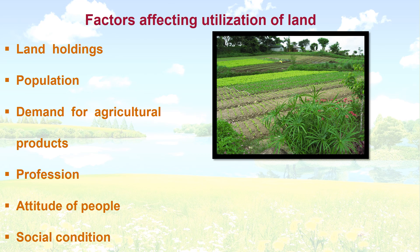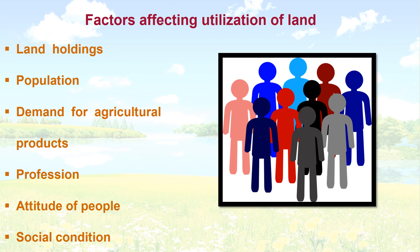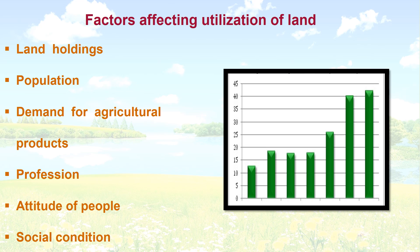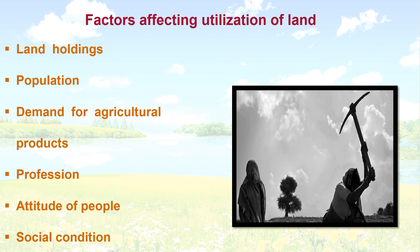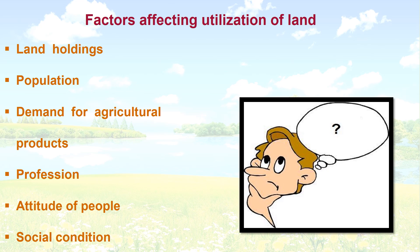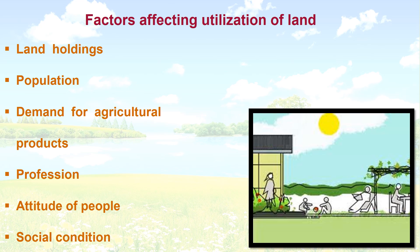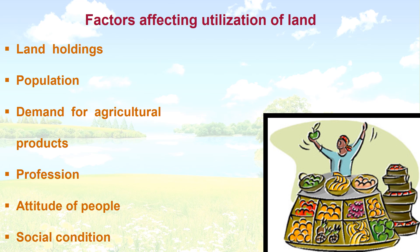Land holdings, population, demand for agricultural products, profession, attitude of people, social condition, and marketing facilities are factors that influence land use.